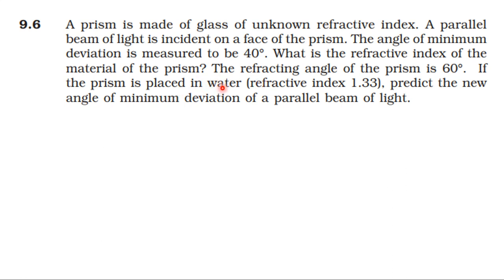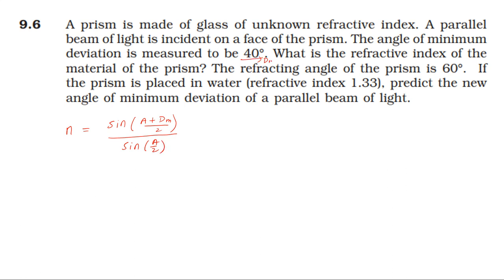The formula for refractive index using minimum deviation is: μ = sin((A + δm)/2) divided by sin(A/2). If we have minimum deviation of 40 degrees, we apply this formula.